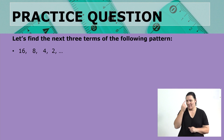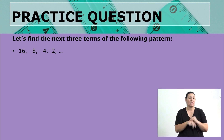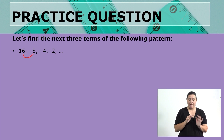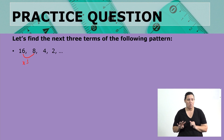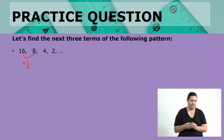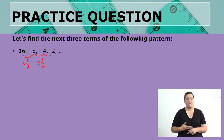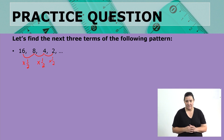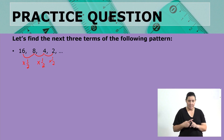If you are thinking that we are dividing the numbers by 2, then you are absolutely correct. To move from 16 to 8 I am dividing by 2, or multiplying by one half. Again, from 8 to 4 I am multiplying by one half, and from 4 to 2 I am multiplying by one half. So if I multiply by a half, what would be the next term?